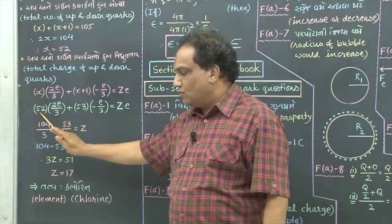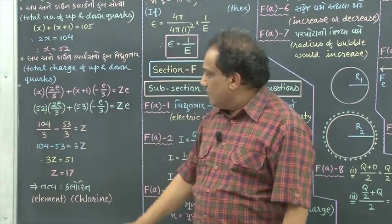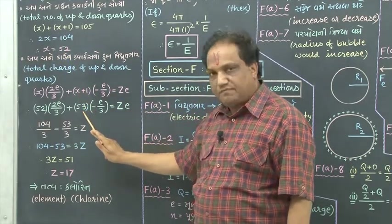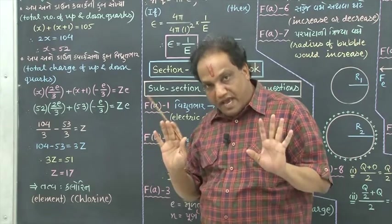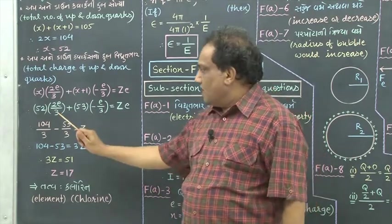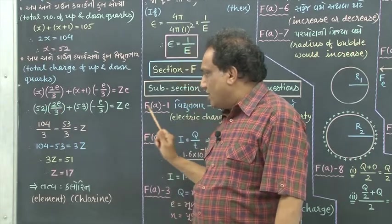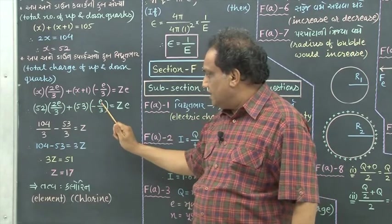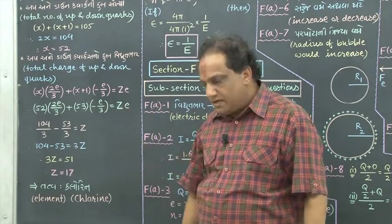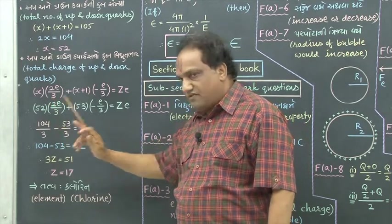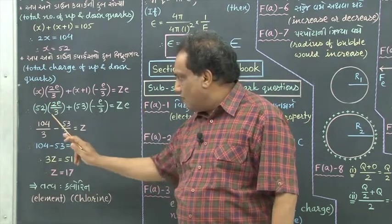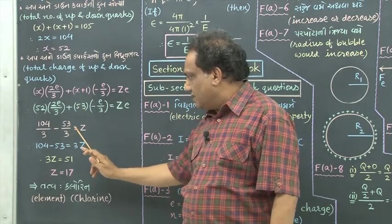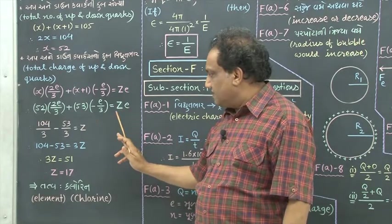The number of up quarks is 52, so x is 52. Put x equal to 52; here also 52 plus 1 is 53. Throughout this equation, you just cancel E — cancel this E, this E, and this E. So we have 104 upon 3 for the up quarks term and minus 53 upon 3 for the down quarks term, and after cancelling E, what remains on the right is Z.